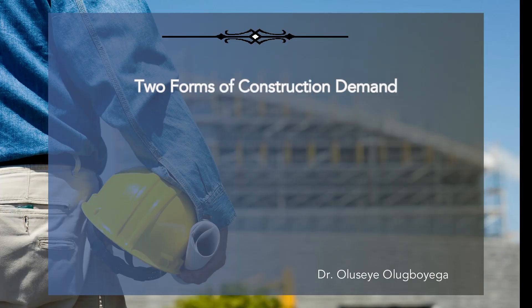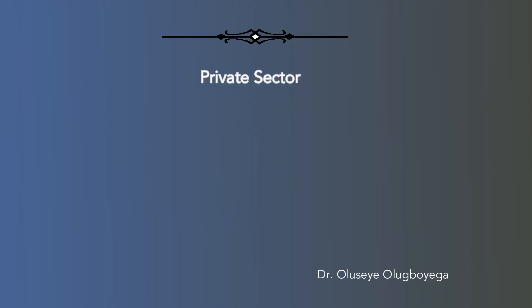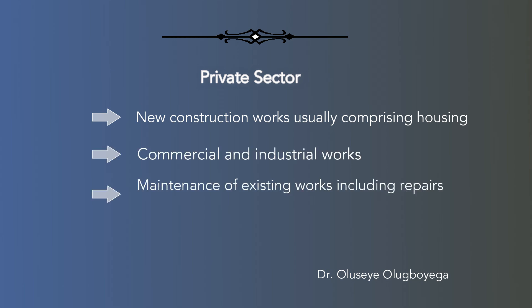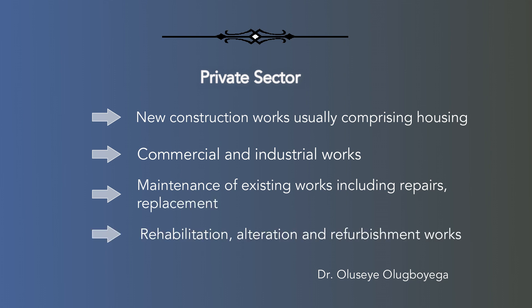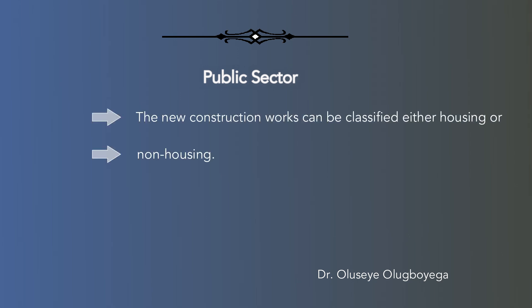Irrespective of the type of construction activity, we can recognize two forms of construction demand, namely: Private sector — new construction works usually comprising housing, commercial and industrial works; and maintenance of existing works including repairs, replacement, rehabilitation, alteration and refurbishment works. Public sector — new construction works classified as either housing or non-housing; and maintenance of existing works as outlined above.